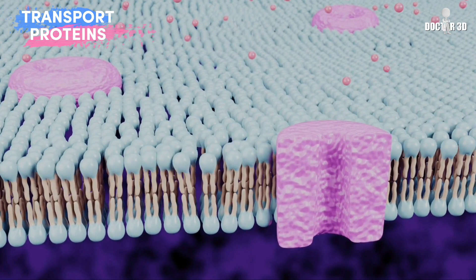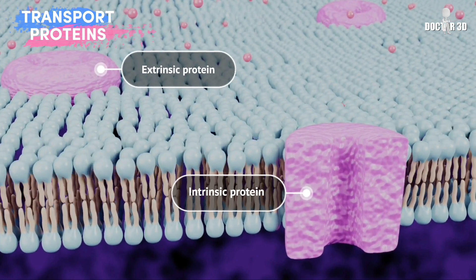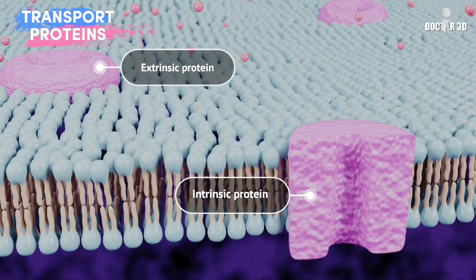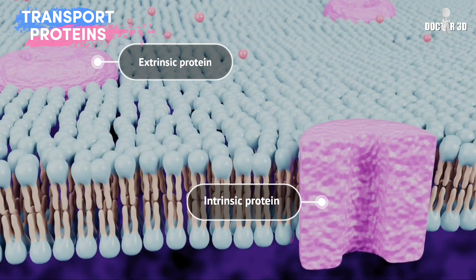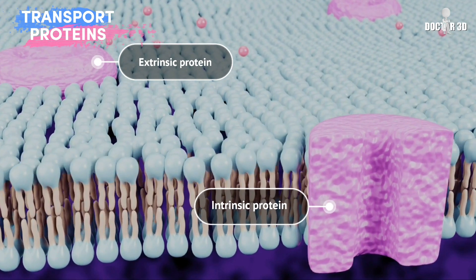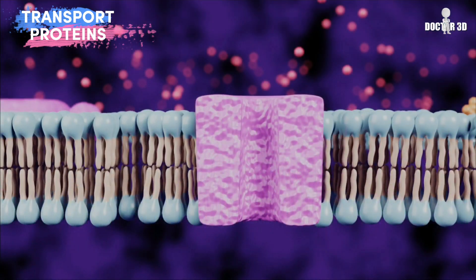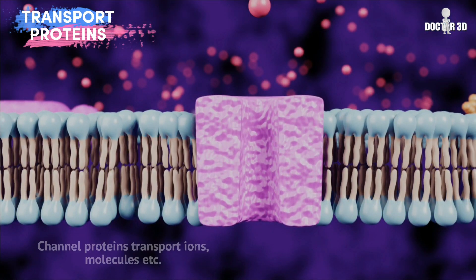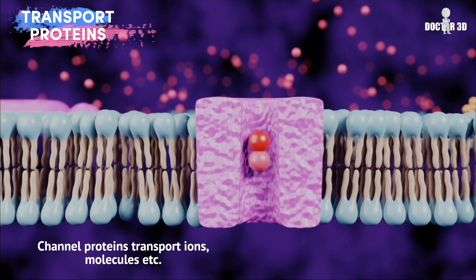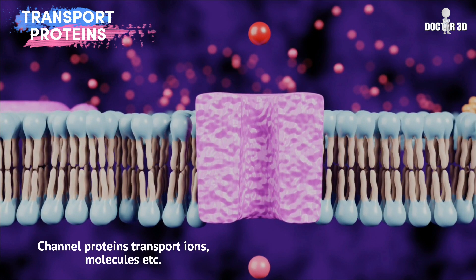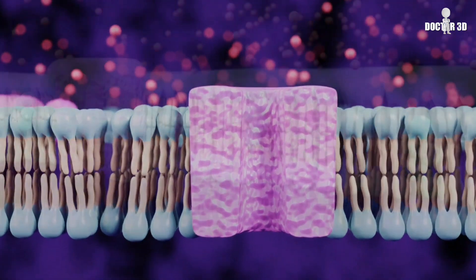Membrane transport proteins are of two types: extrinsic proteins and intrinsic proteins. Extrinsic proteins are present on the outside of the membrane; intrinsic proteins are embedded in the membrane. Functionally, these proteins are involved in the movement of ions, small molecules, and macromolecules across the membrane.